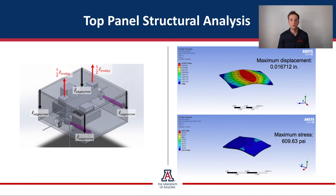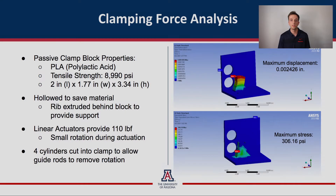Because of the load that the top panel of the zipline box will undergo, it is important to find its load limit. ANSYS simulation software was used to find the maximum displacement and stress created from a 20-pound load distributed between the two L-bracket connections. The maximum displacement was found to be 0.43 millimeters and the max stress was 609 psi. Because the linear actuators can provide 110 pounds of force, it is crucial that the passive clamp can accommodate this load. This load was simulated in ANSYS resulting in a maximum displacement of 0.05 millimeters and a max stress of 306 psi, which is well within the tensile strength of the PLA material at approximately 9,000 psi.